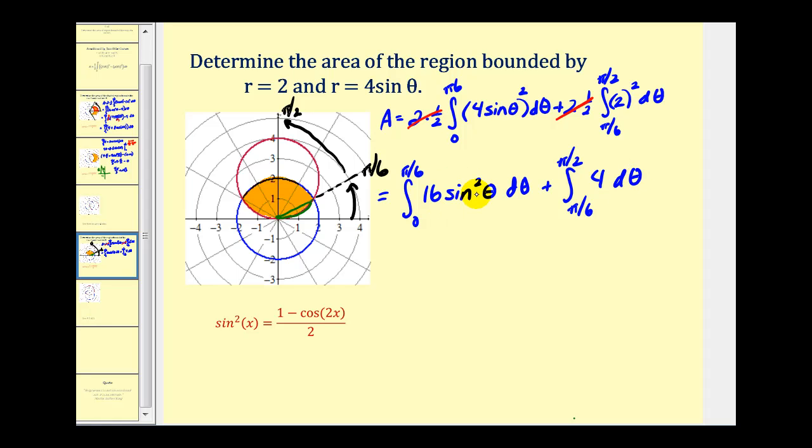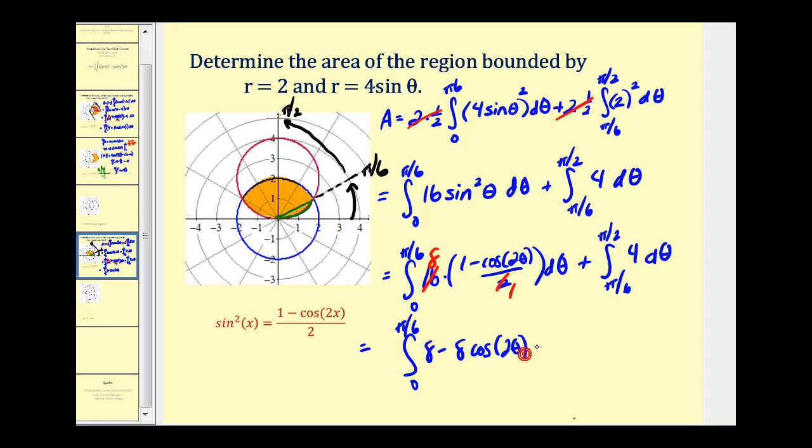We will have to apply the power reducing formula here for sine squared theta. And this simplifies. So we'll have eight minus eight cosine two theta. Let's go ahead and continue this on the next slide.